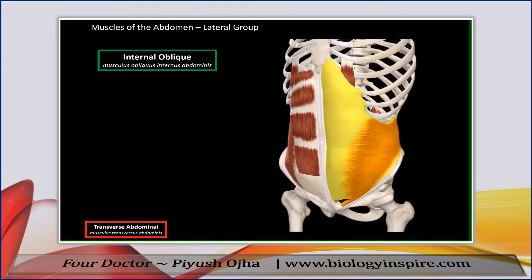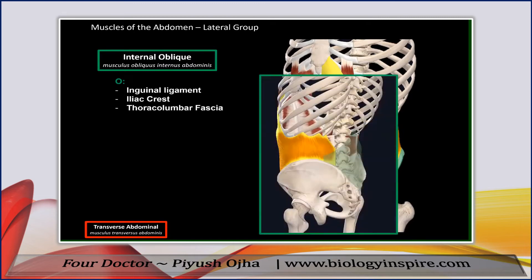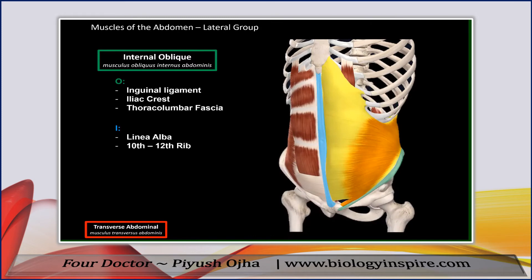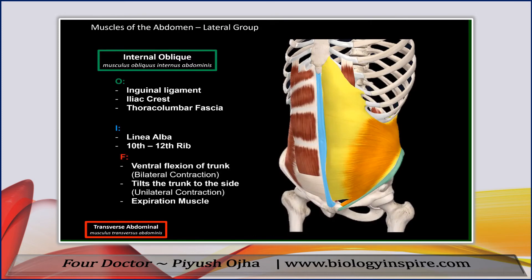Then we have the internal oblique muscle. It originates from the inguinal ligaments, the iliac crest, and the thoracolumbar fascia. It inserts at the 10th to 12th rib as well as the linea alba. Its function is ventral flexion of the trunk if both sides contract, or tilting the trunk to the side if only one side contracts. It also adjusts the intra-abdominal pressure and aids with expiration by pushing the diaphragm upwards.